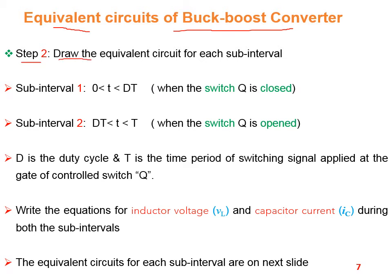Step number 2 is to draw the equivalent circuits for each sub-interval. The operation of the buck-boost converter can be explained in two modes or two sub-intervals. Sub-interval 1 has a duration from 0 to DT, and during this sub-interval the switch Q is closed.